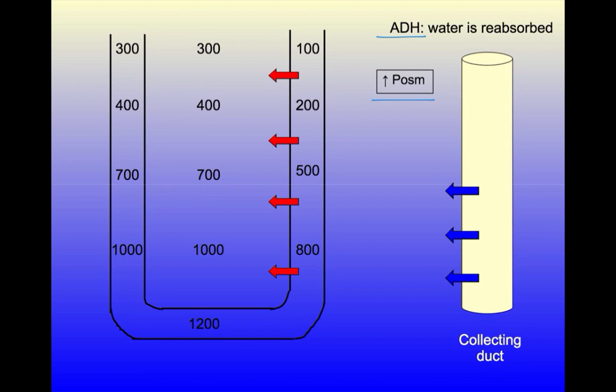Note that the osmotic force that pulls water out through the water channels is the vertical 1100 milliosmolar gradient of the medullary interstitium, which is created and maintained by the work of the countercurrent multiplier.